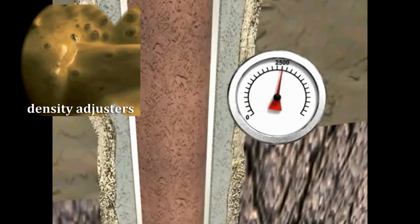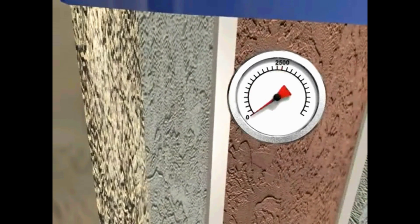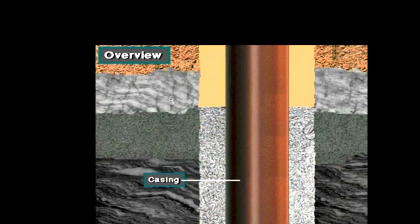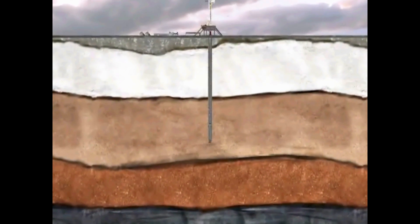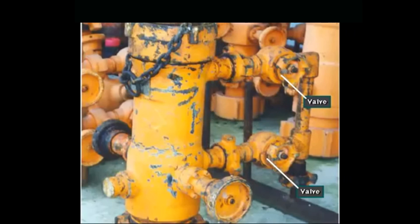Density adjusters increase the cement weight to reduce pumping pressures or to permit a higher cement column without fracturing the formation. After the casing is in place, the cement is properly blended with water and the hole is prepared for pumping.